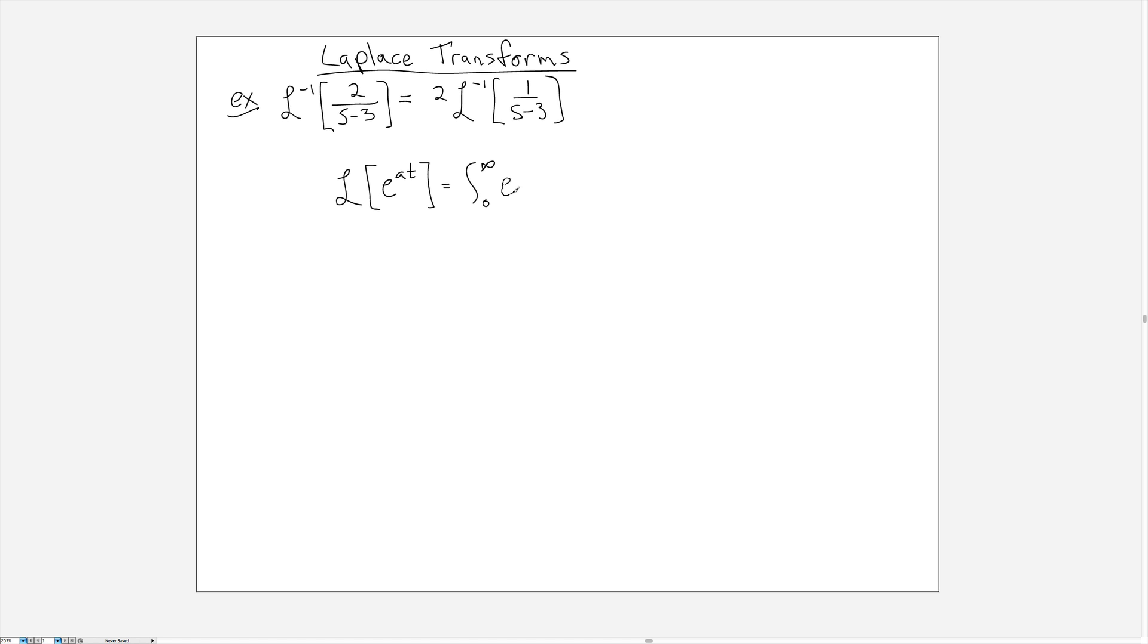If you take the transform of e to the at, that is exactly the integral from 0 to infinity of e to the minus st times e to the at dt, where a is just some constant. Now finding the antiderivative of this, we can combine those two exponentials and we get a minus s times t dt.